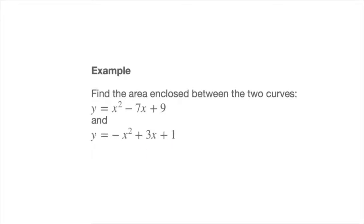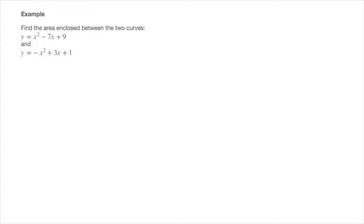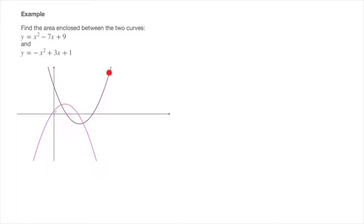Let me move this question to the side. Now if we have a graphical calculator, the first thing we would do is to quickly plot both of these curves on the same xy grid, and in doing so we should end up with a graph looking something like this. The purple curve is y equals x squared minus 7x plus 9, and the pink curve is y equals negative x squared plus 3x plus 1. The area we want to calculate is the area currently hatched in grey.